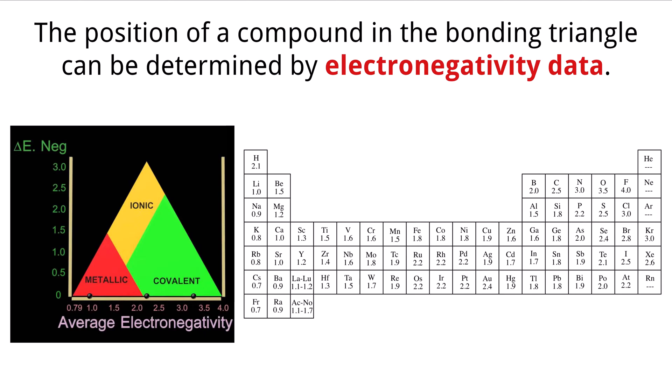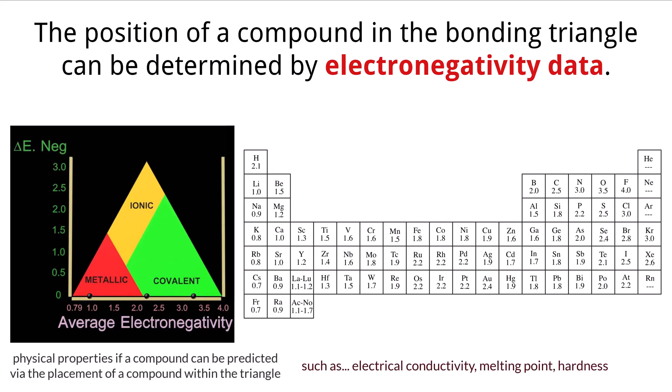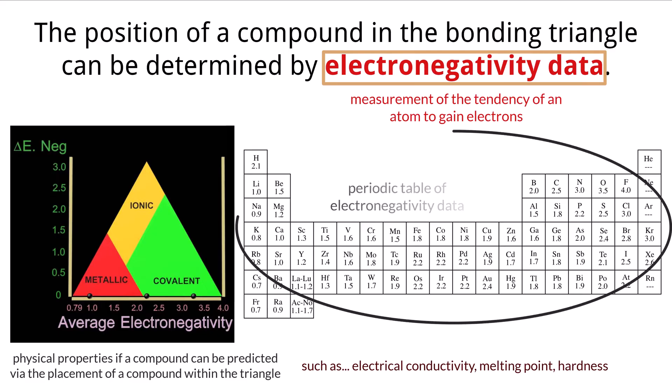By considering the position of a material within the triangle, scientists can gain insights into its physical properties, such as electrical conductivity, melting point, and hardness. The position of a compound in the bonding triangle can be determined by electronegativity data. Electronegativity is a measure of the tendency of an atom to gain electrons. Electronegativity values can be looked up and are different for every element, as seen here on this periodic table.